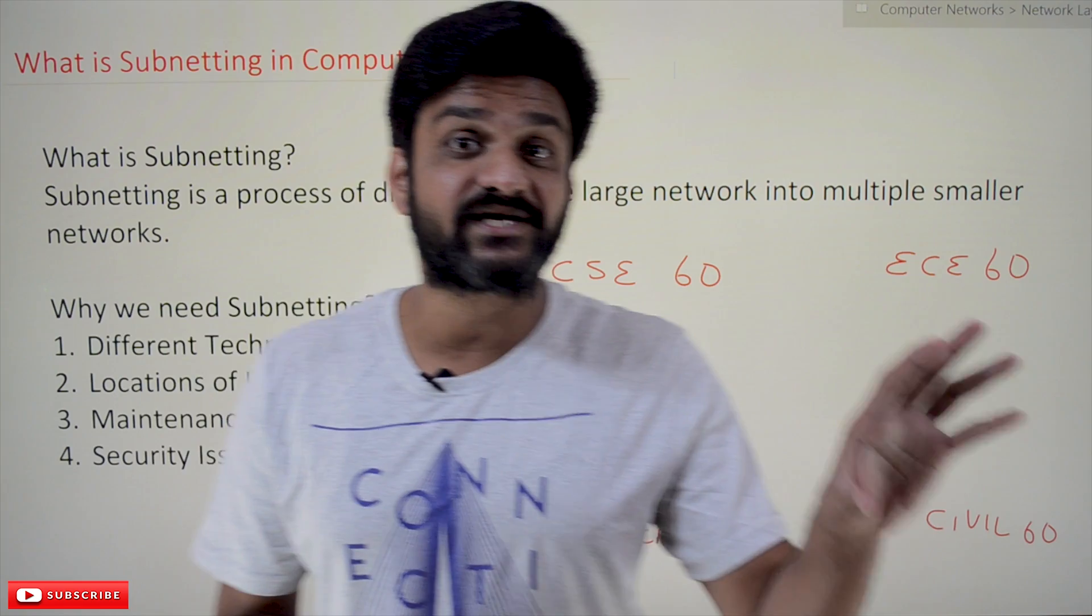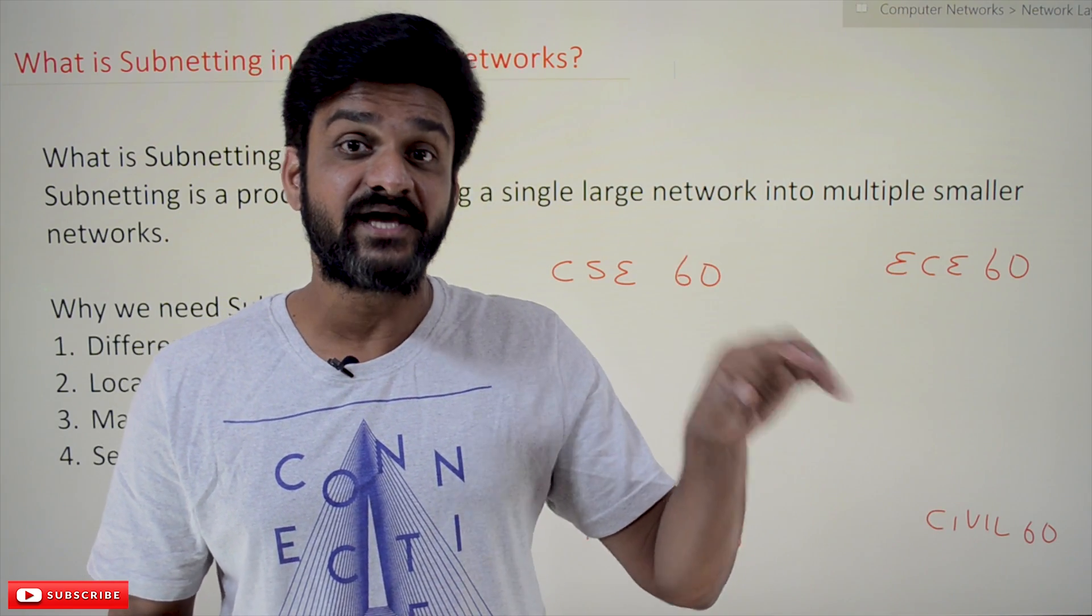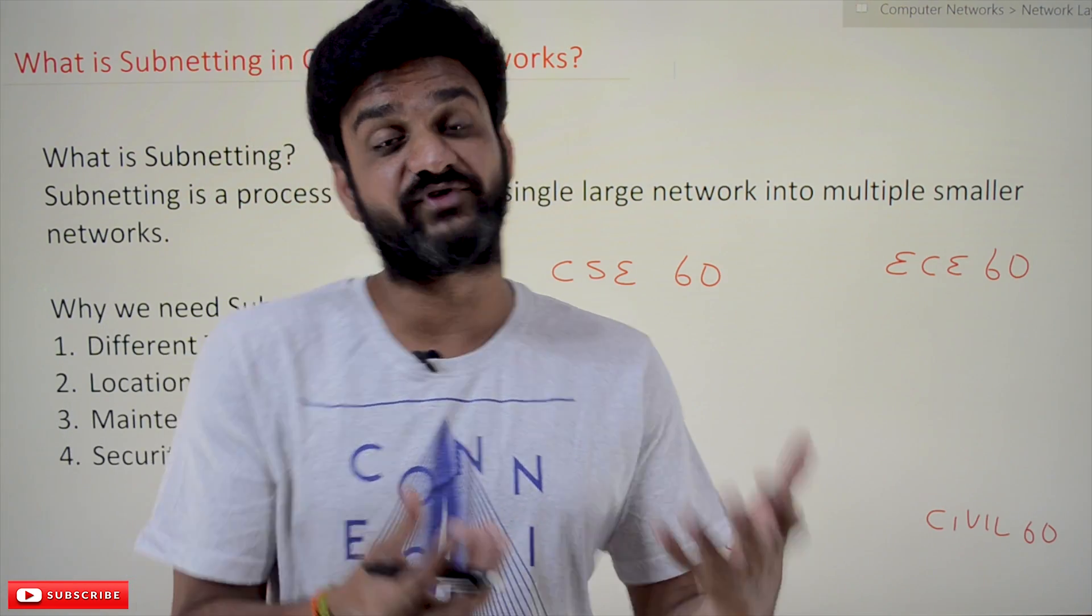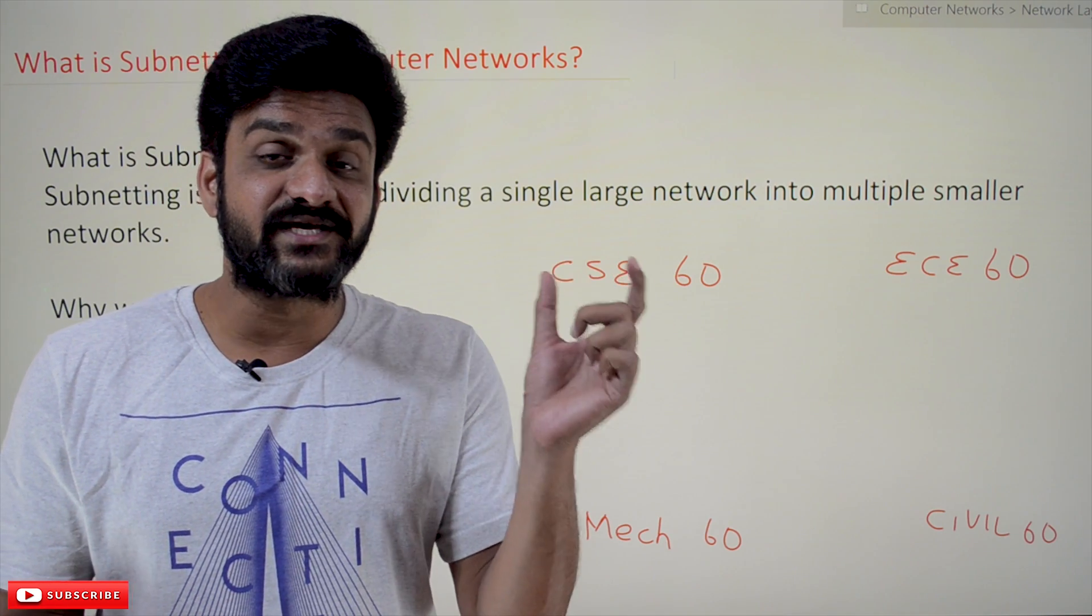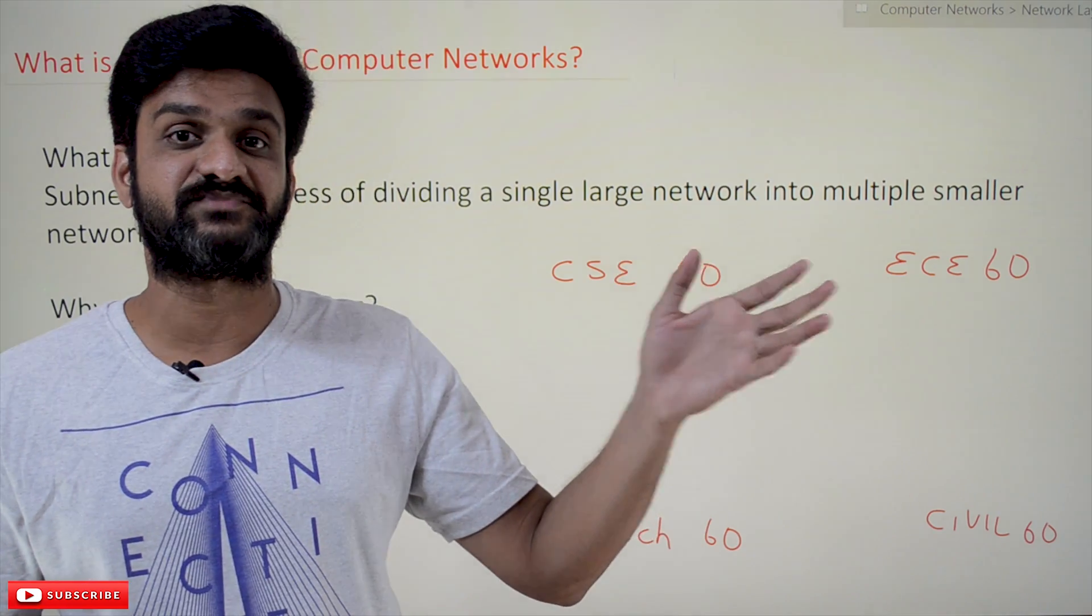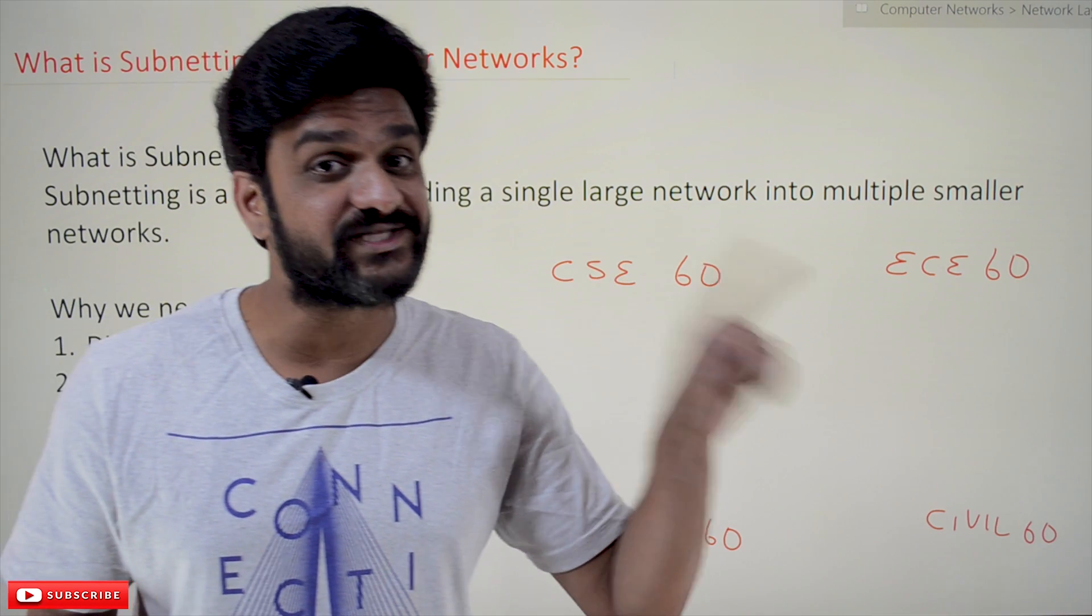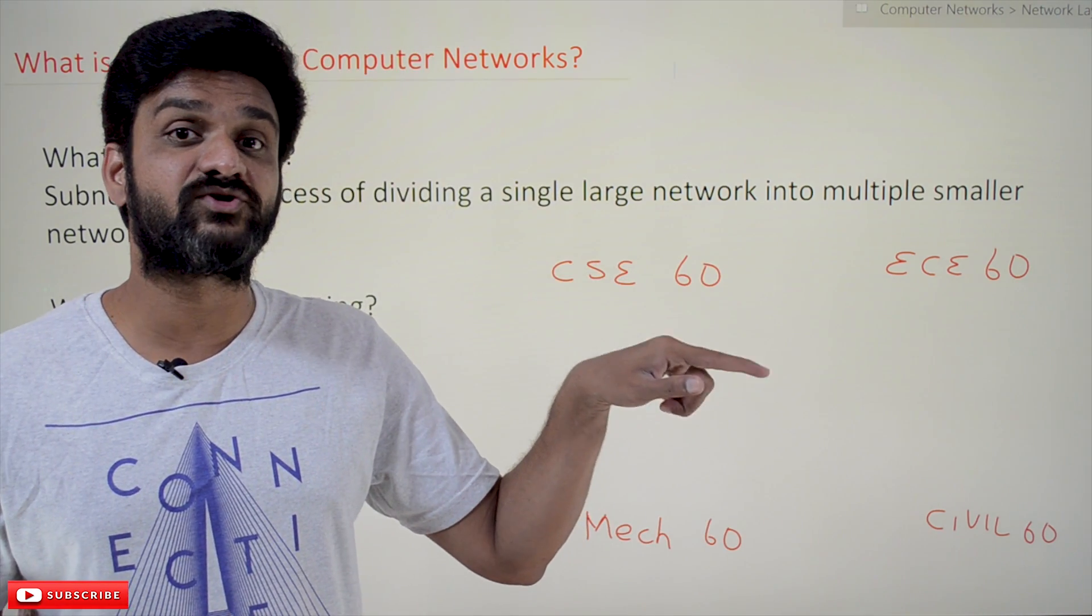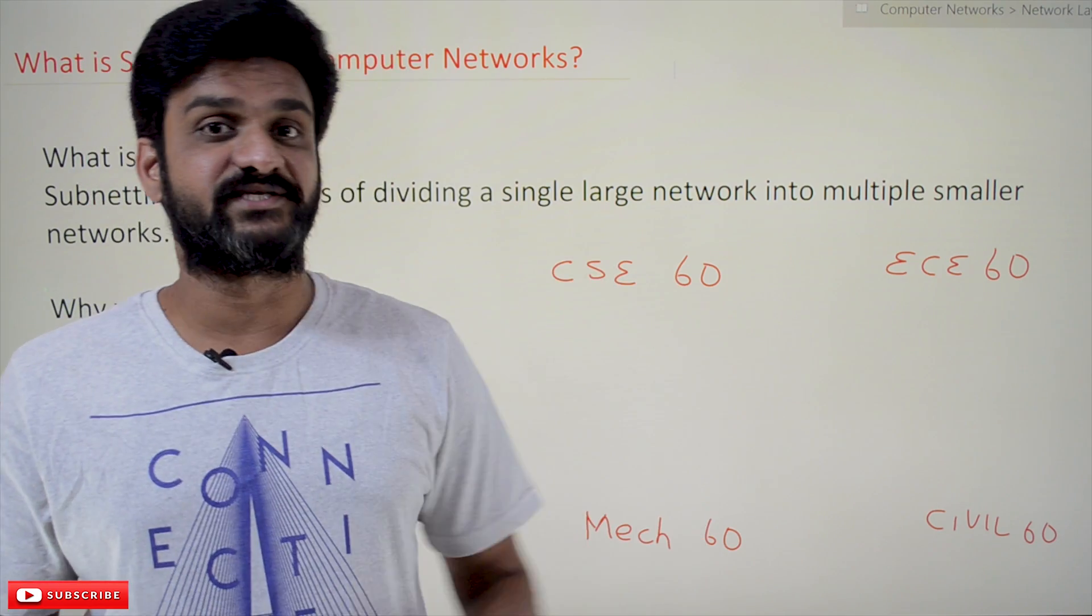As we have discussed, there are different classes of addressing like Class A, Class B, Class C, and each class provides its own way of connecting the systems. For example, if you take Class A, one single address can configure 16 million systems. Similarly, if you take Class B, 65,000 systems can be configured in one single network. In the same way, Class C addressing is capable of configuring 256 systems.